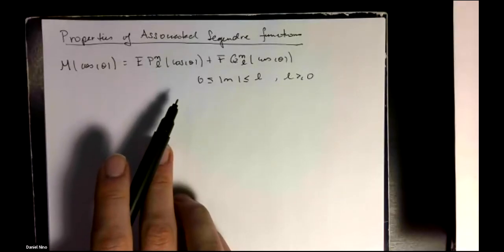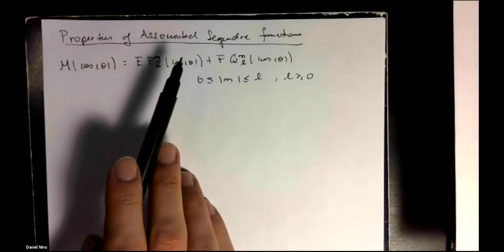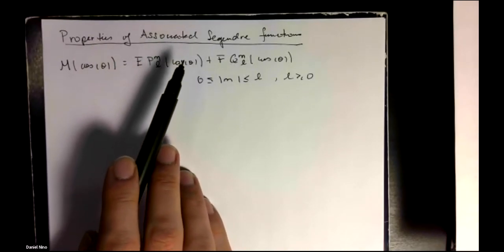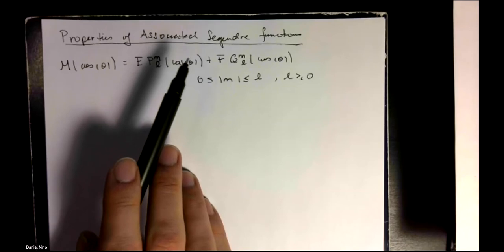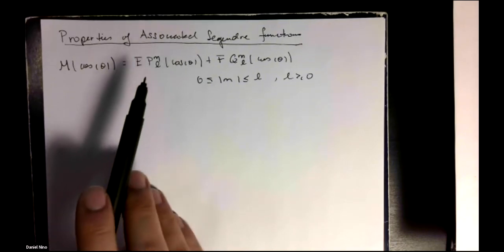In this video, we'll go through some properties of the associated Legendre functions, which were the solution to the theta equation, the azimuthal angle equation, in the previous video.